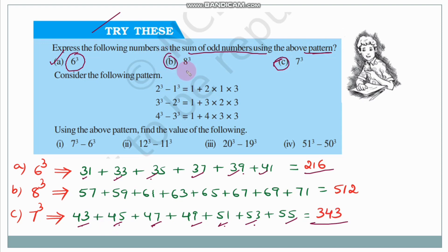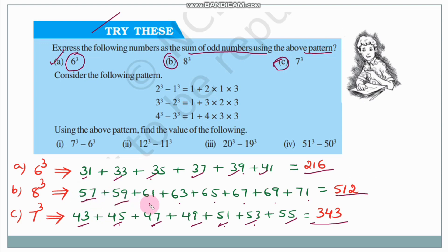For 8³: we need 8 consecutive odd numbers. 8³ = 57+59+61+63+65+67+69+71. Counting: 1, 2, 3, 4, 5, 6, 7, 8 — that's 8 consecutive odd numbers, giving us 8³ = 512. Understood, children?